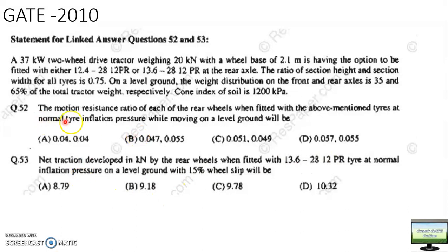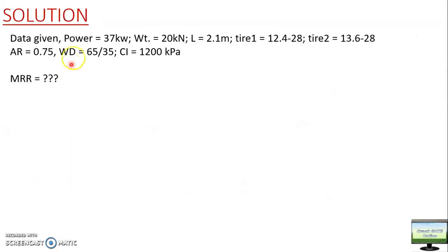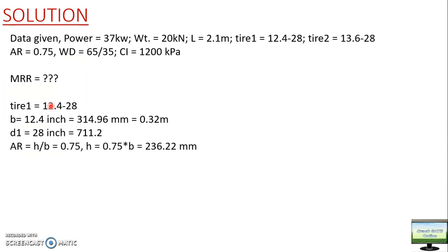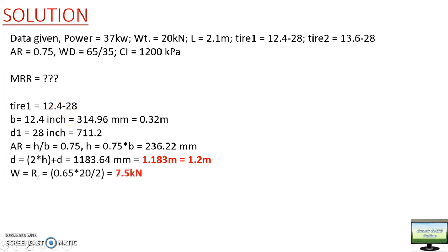Weight distribution is 35% front and 65% rear. Cone index is 1200 kilopascals. They ask you to calculate the motion resistance ratio for each tire. The first step is to calculate tire diameter - calculate section width, nominal rim diameter, then use the aspect ratio to calculate overall diameter and section height. In this case the overall diameter becomes 1.2 meters.